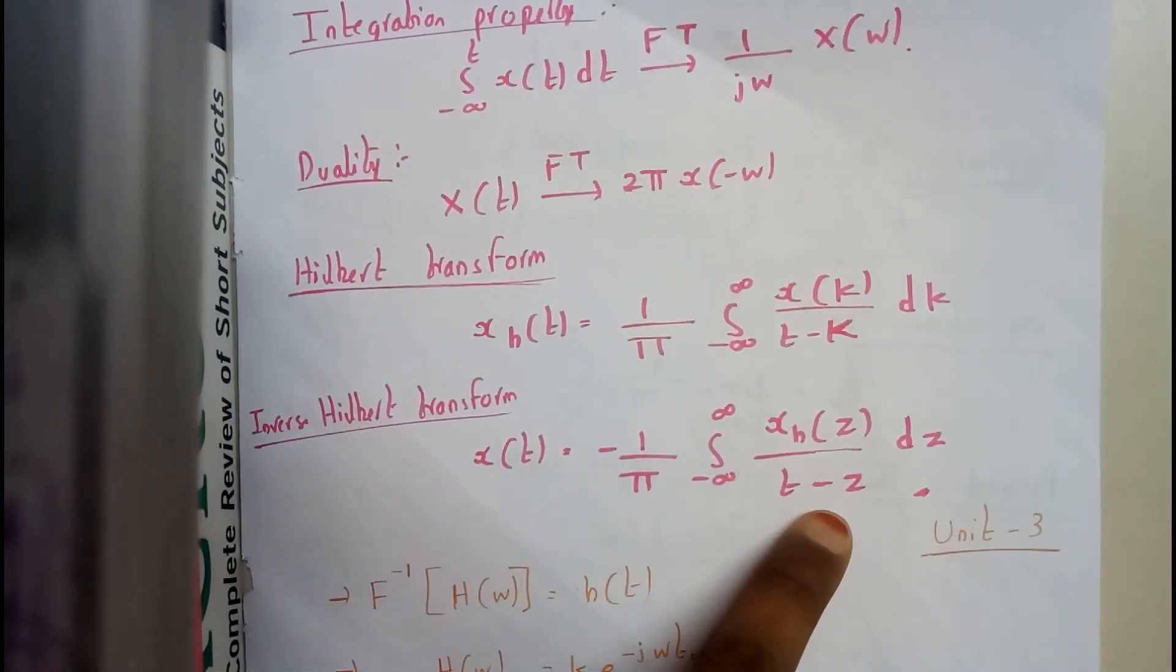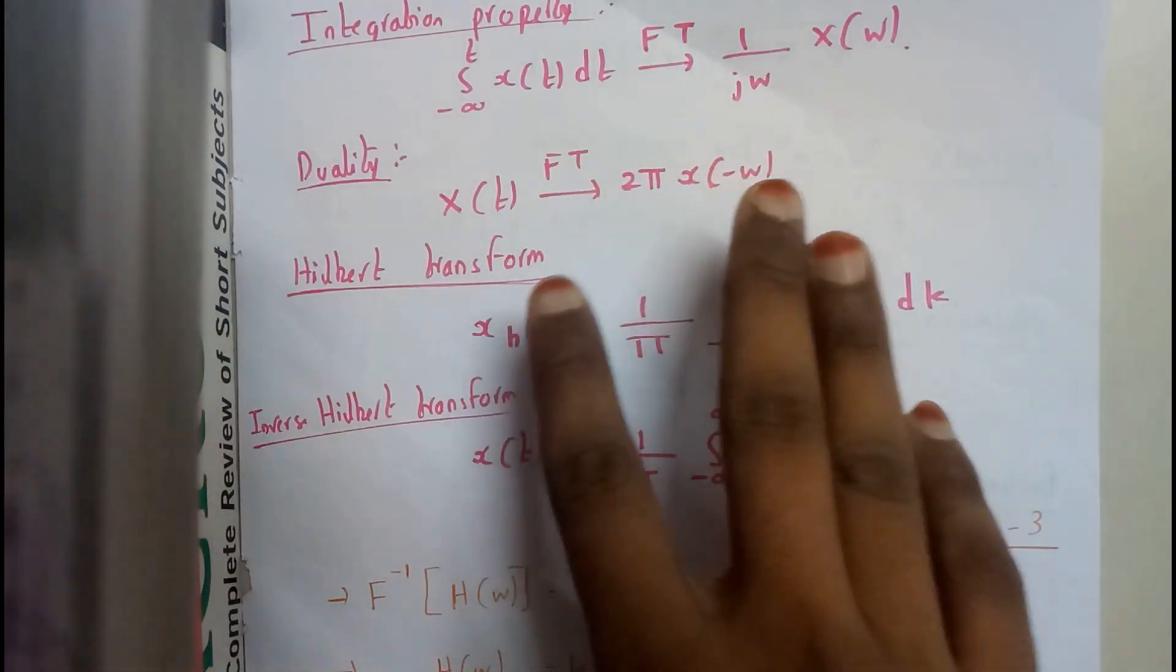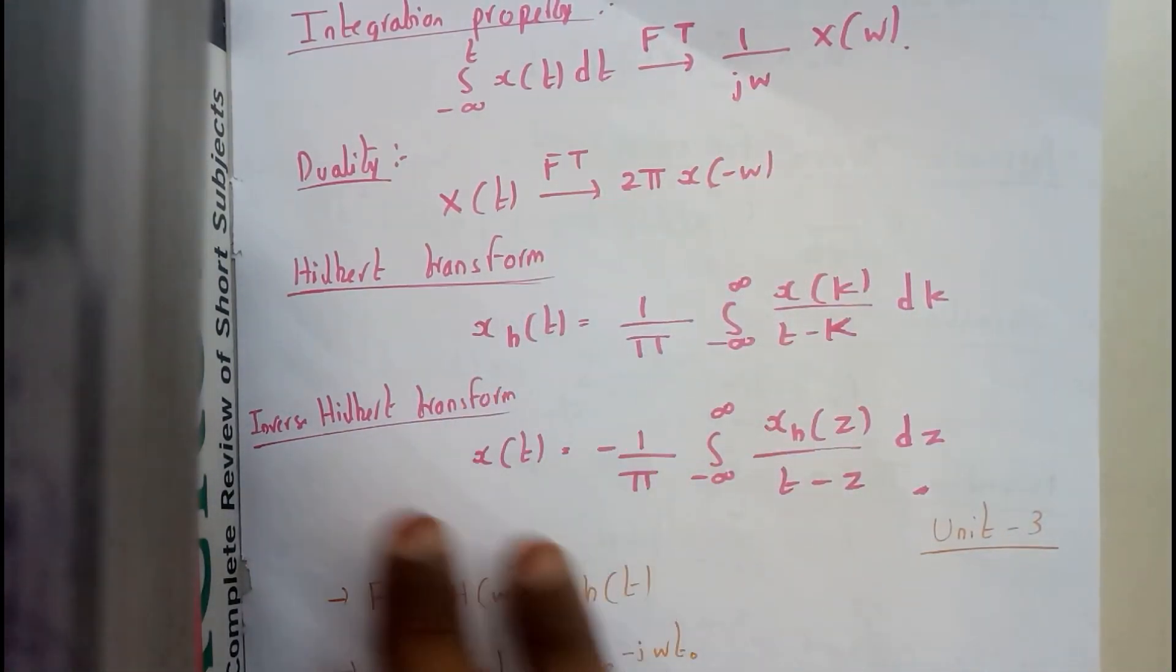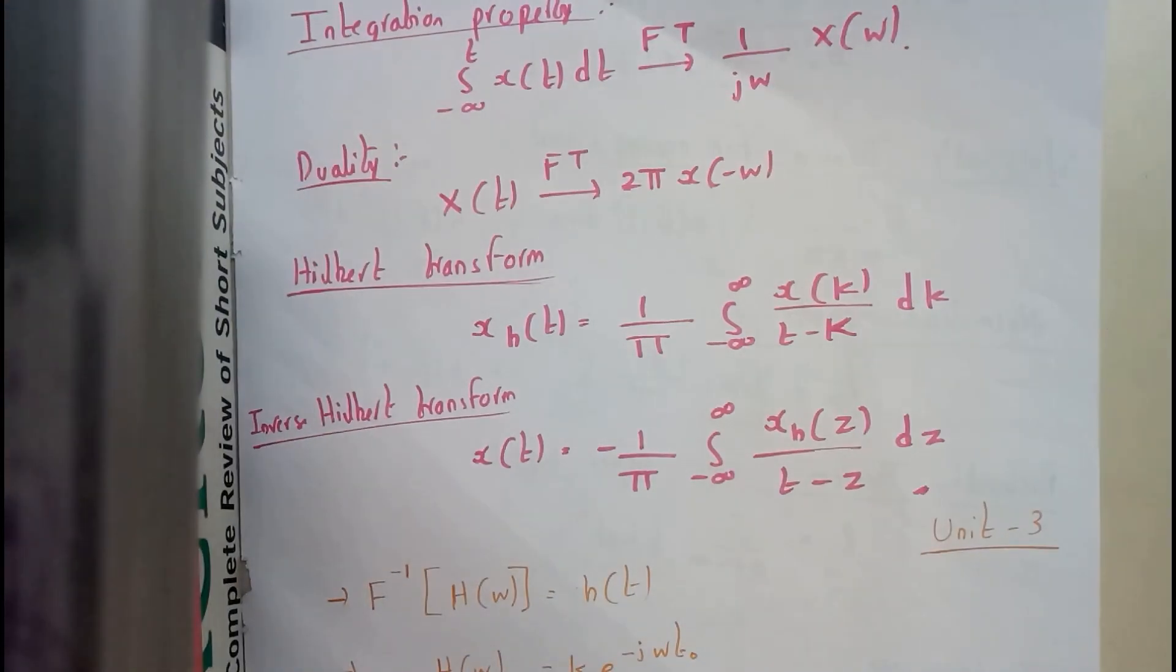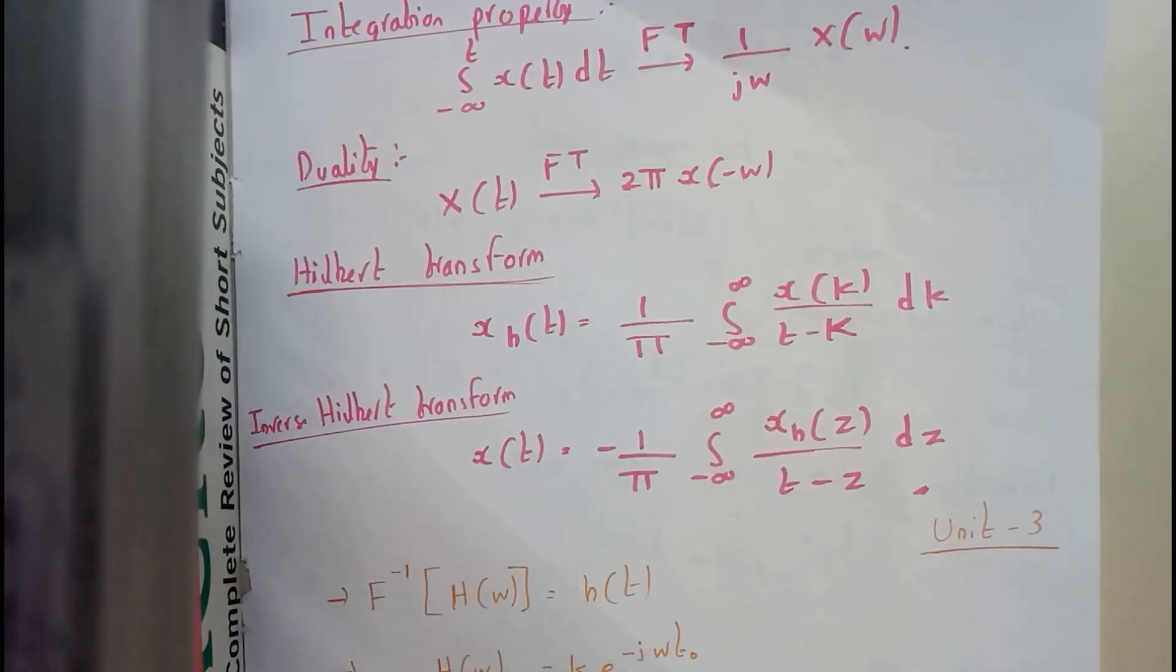So I hope at least be perfect with at least four properties of Fourier transform. Because the most seen in question papers is that write any four properties of Fourier transform.